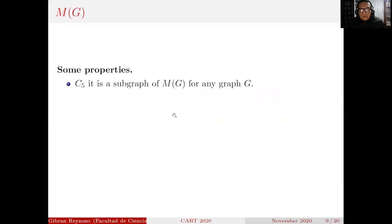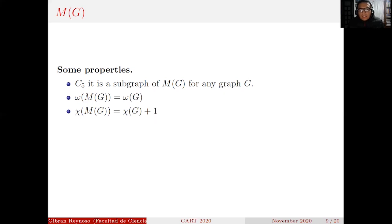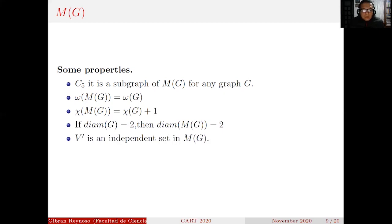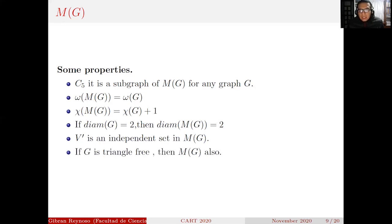Some properties of the Mycielski's graph: C5, the cycle of length 5, is a subgraph of M(G) for any graph G. The clique number of M(G) equals the clique number of G. The chromatic number of M(G) equals the chromatic number of G plus 1. The diameter of M(G) is 2. V′ is an independent set in M(G), meaning there are no edges between any pair of vertices in V′. If G is triangle-free, then M(G) is also triangle-free.